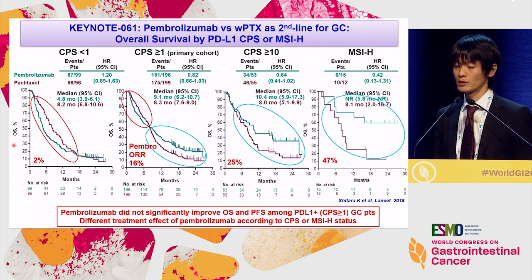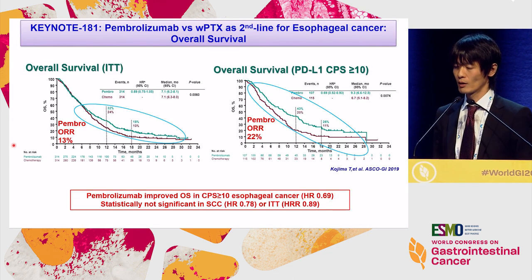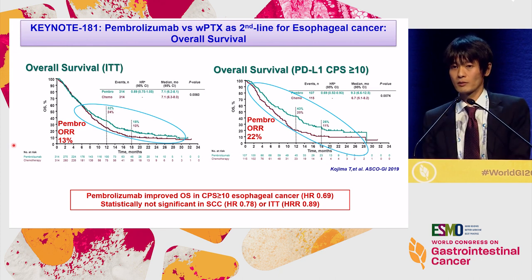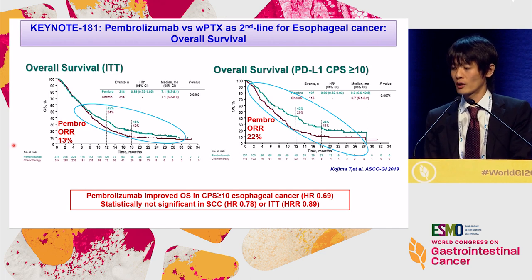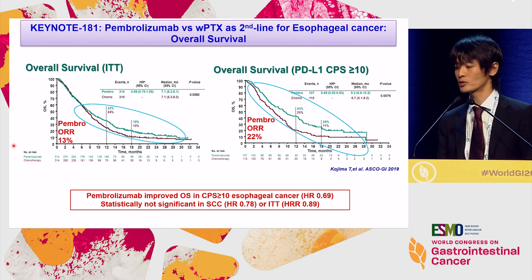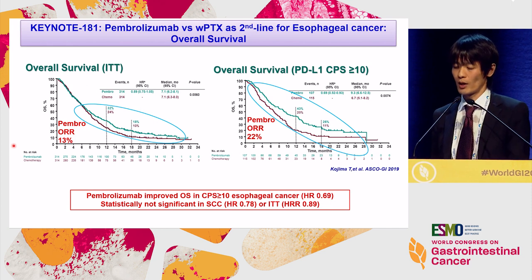Gastric cancer is clearly not one disease in terms of response to checkpoint blockade. Today's talk mainly focuses on gastric cancer, but the Keynote 181 trial for esophageal cancer also suggests the predictive value of PD-L1 expression, where only the PD-L1 CPS10 subgroup met the primary endpoint.